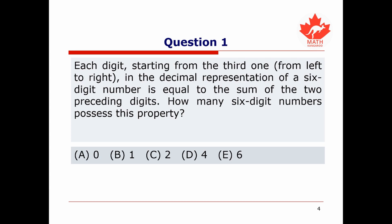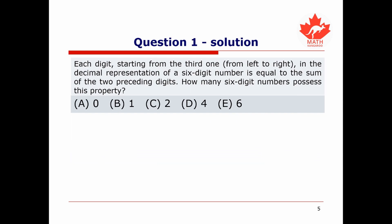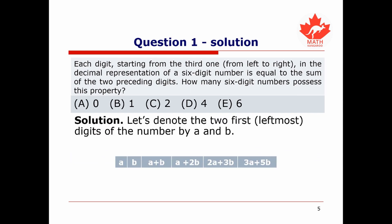This question asks: each digit, starting from the third one from left to right in the decimal representation of a six-digit number, is equal to the sum of the two preceding digits. How many six-digit numbers possess this property? The first thing we can do is label the first and second digits of our number by A and B, and then compute what the other digits are based on these.